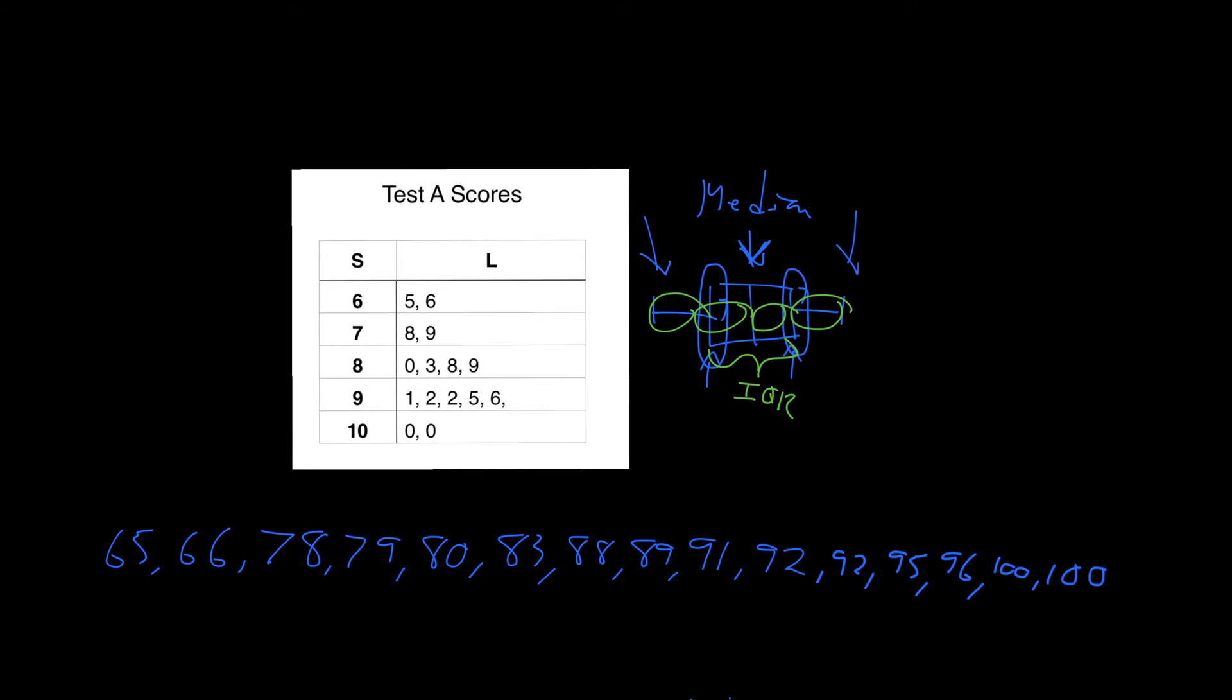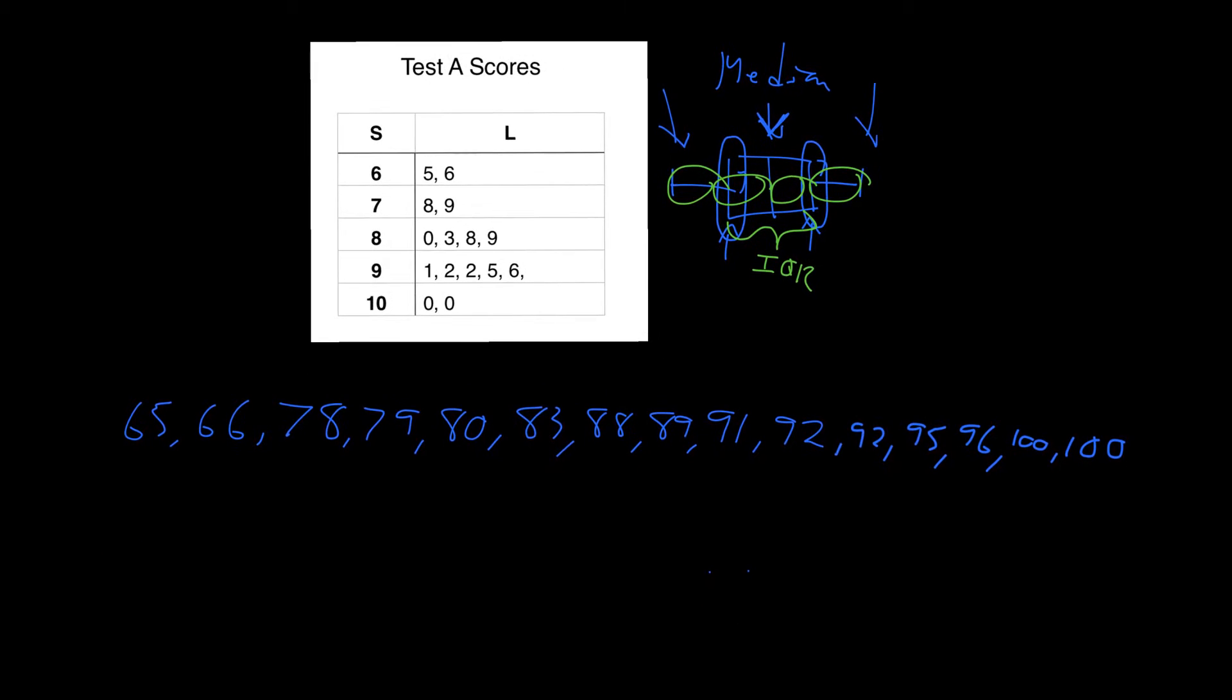So basically what we're going to do first is we need to find the median, the middle number. And so let's count these. We have 1, 2, 3, 4, 5, 6, 7, 8, 9, 10, 11, 12, 13, 14, 15 numbers.